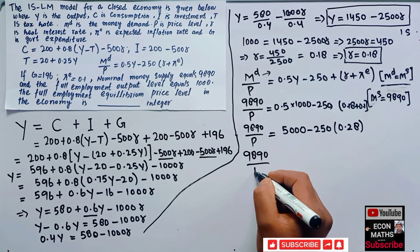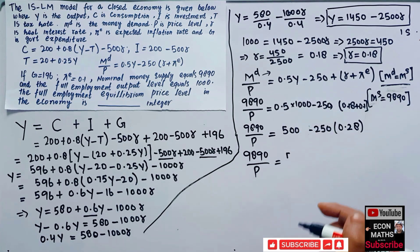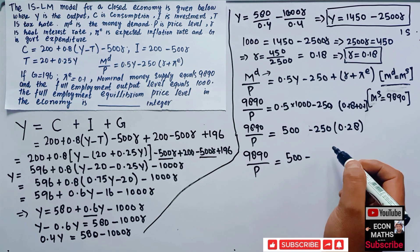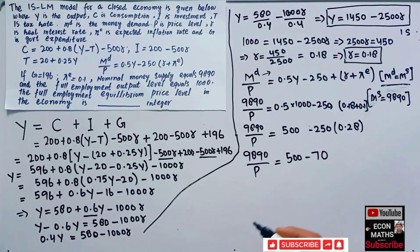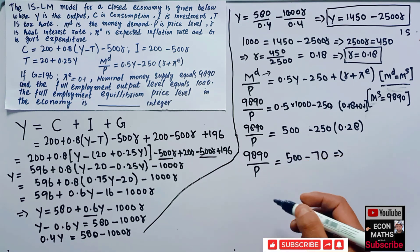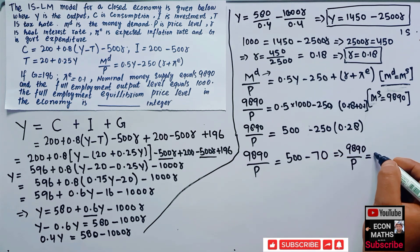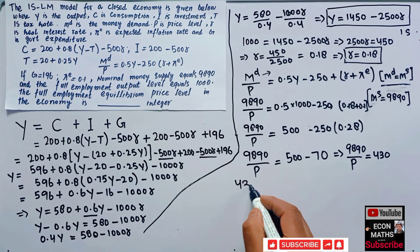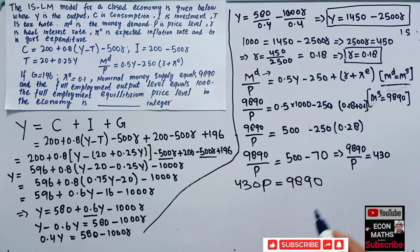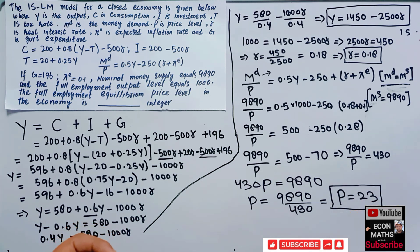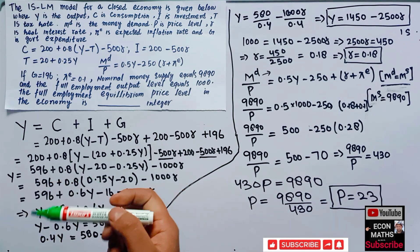So 9890/P = 430, which gives 430P = 9890, and therefore P = 9890/430 = 23. The full employment equilibrium price level is P = 23.